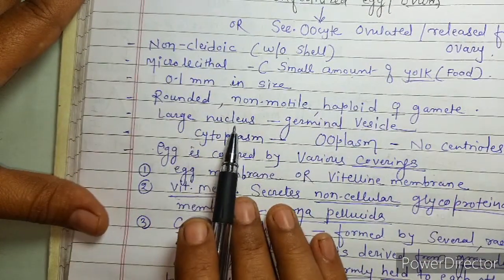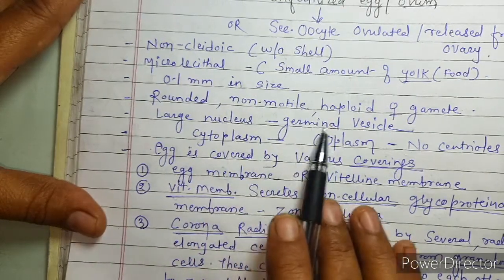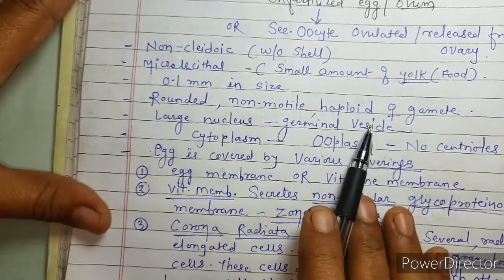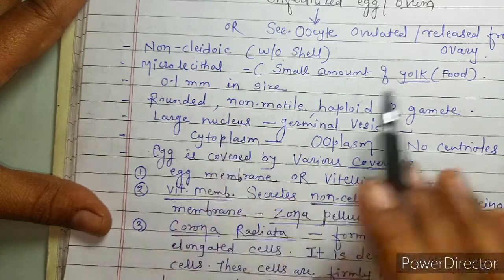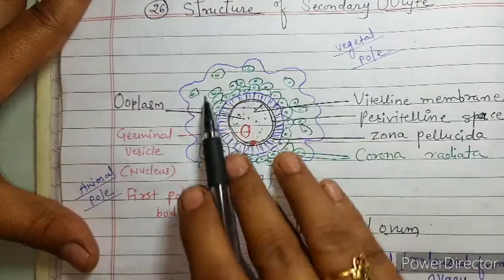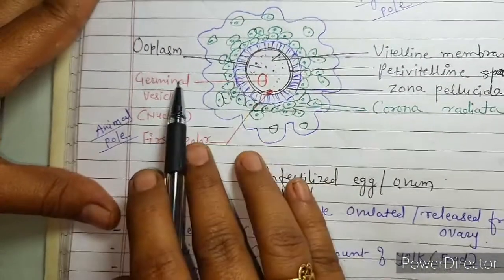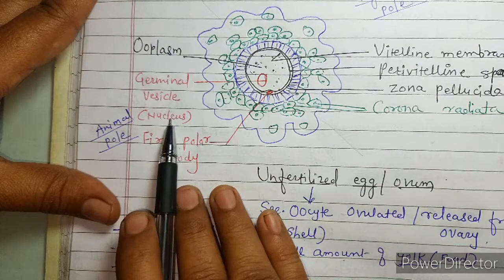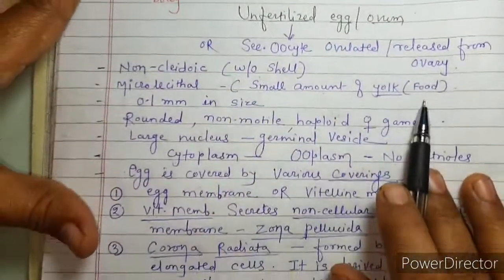There is a large nucleus which you can observe in the diagram, and this large nucleus is called the germinal vesicle. The germinal vesicle later on forms the pronucleus and then the nucleus during the process of fertilization.